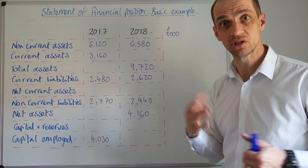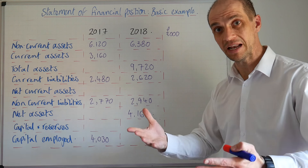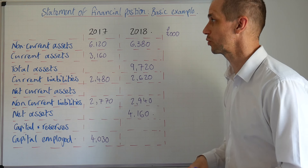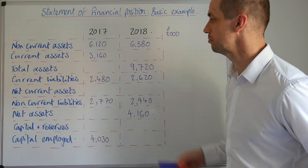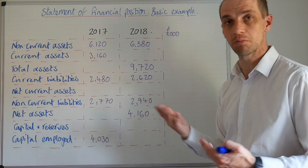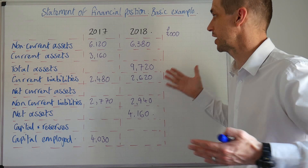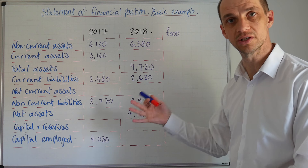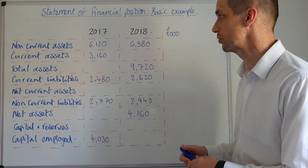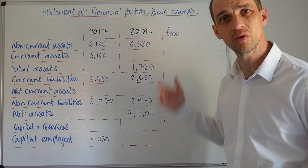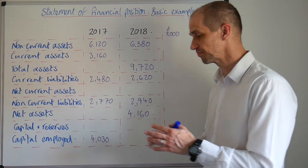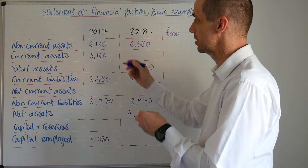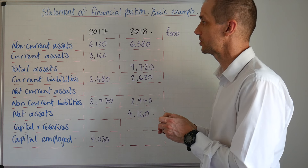This is clearly a business which is in the process of expanding — it's trying to increase its output and increase its reach. We've got some missing information here that we need to complete for this statement of financial position. That's going to be nice and straightforward, and then we'll run through what the information truly means. So let's fill in the missing areas.